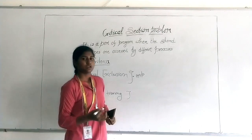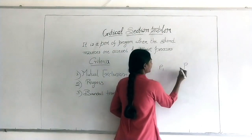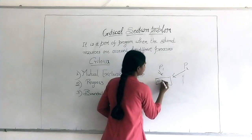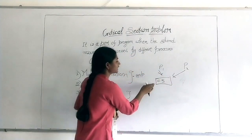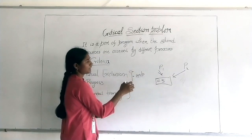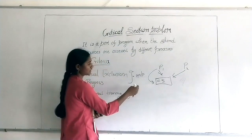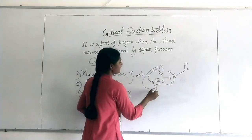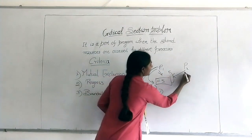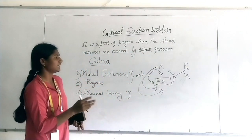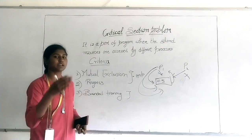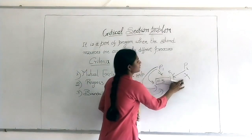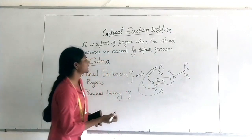The third criterion is bounded waiting. You have processes P1 and P2, both wanting to use the critical section. But P1 keeps going into the critical section, executing, and again getting the chance continuously. P2 is never getting a chance to use the critical section. This should not happen — it should not be that only one process can continuously use the critical section for an infinite time. Every other process should also get the chance.